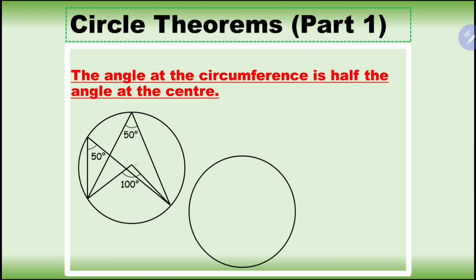Here's another example: wherever the angle is at the center, the angle at the circumference is going to be half that angle. So if the angle at the circumference is 15, the angle at the center is going to be double, which is 30 degrees.